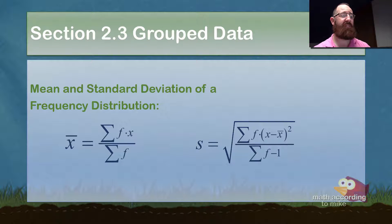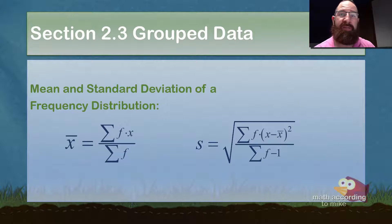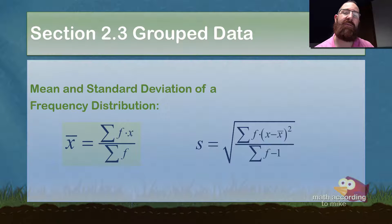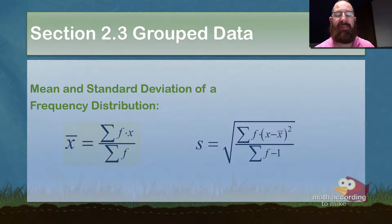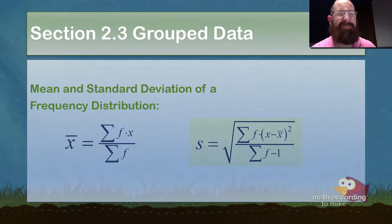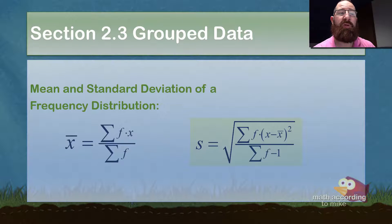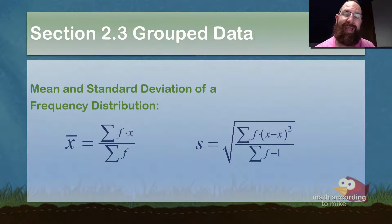So the mean and standard deviation of our frequency distribution. On the left, x-bar is the mean of a sample. Sigma means the sum, and the numerator says it's the sum of f times x — meaning you multiply the frequencies by the corresponding value of x and add them all together. The denominator is the sum of all the frequencies, sigma f. For the standard deviation, it's the square root of f times (x minus x-bar) quantity squared, over sigma of f minus 1. Notice in the denominator, you first add up all the frequencies and then subtract 1, which mirrors the n minus 1 from section 2.2.